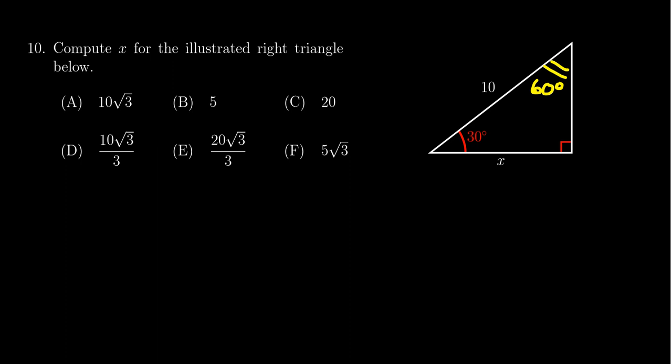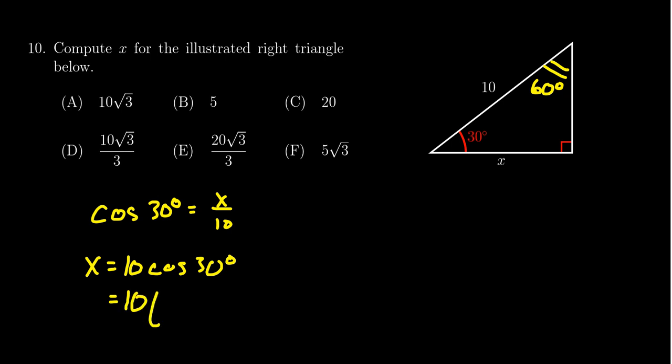So this really is a 30-60-90 triangle. Since we need to know the adjacent side and the hypotenuse, you could do a cosine ratio. We could say that cosine of 30 degrees equals x over 10, for which you could clear the trigonometry and get x equals 10 times cosine of 30 degrees. We have to remember that cosine of 30 degrees equals root 3 over 2. Two goes into 10 five times, so you get 5 root 3. That would be an appropriate way to solve this one, getting choice F.